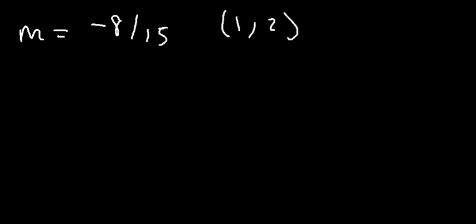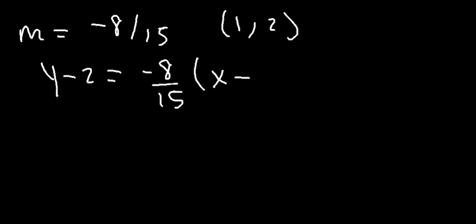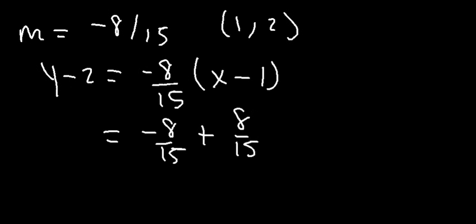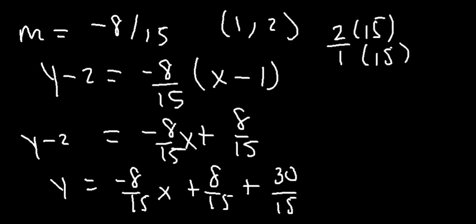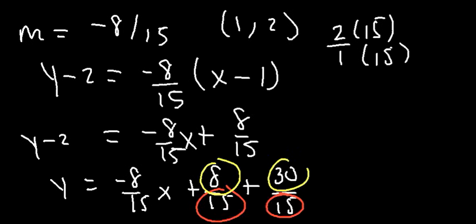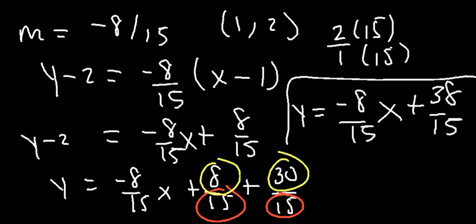So our slope at the point 1 comma 2 is negative 8 over 15. With this information we can now find the equation of the tangent line. So y minus 2 is equal to negative 8 over 15 times x minus 1. Let's distribute: it's negative 8 over 15 x plus 8 over 15. Then add 2 to both sides. To add 2 to 8 over 15, we need common denominators — 30 over 15 is the same as 2. So the final answer for the equation of the tangent line in slope-intercept form is y equals negative 8 over 15 x plus 38 over 15. That's it for this video. Thanks for watching.